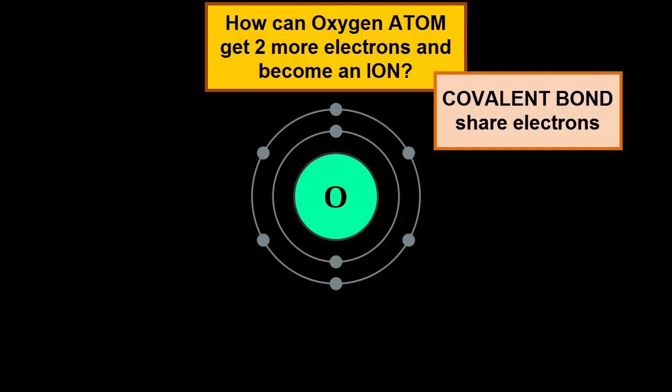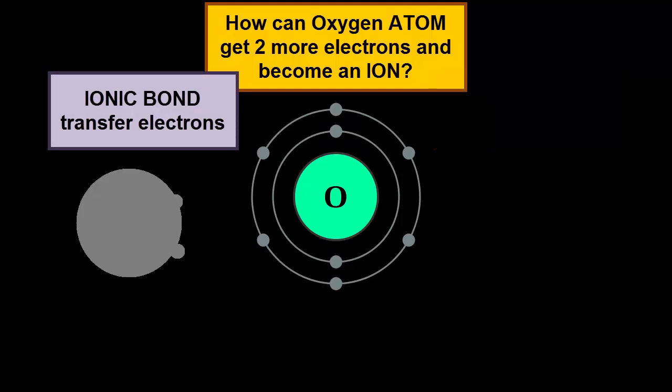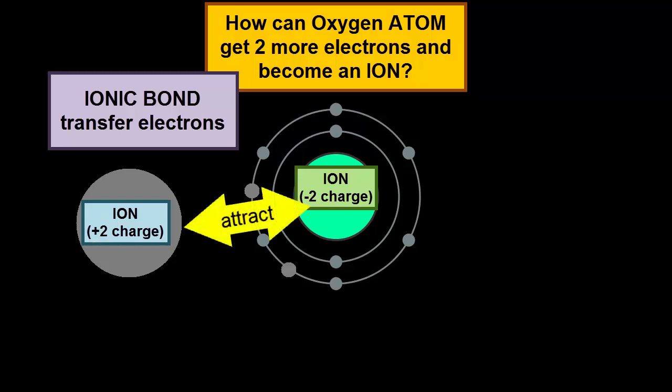Sharing electrons, a covalent bond. Or transferring electrons, an ionic bond. Since in ionic bonds electrons are given from one atom to another, they produce two equal but oppositely charged ions. These opposite charges attract one another, forming an ionic bond.